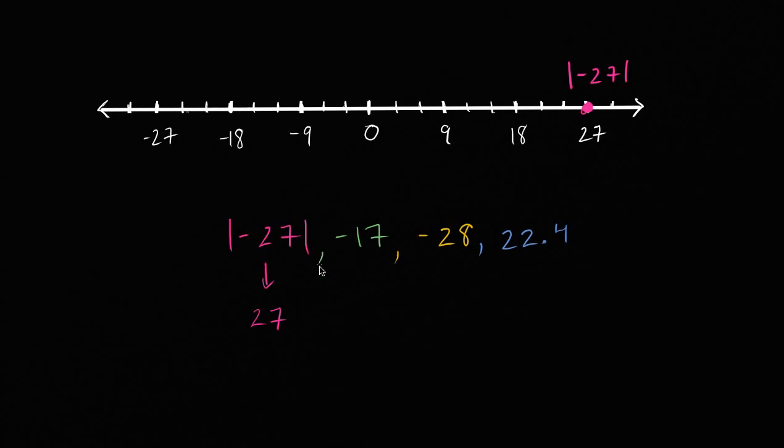All right, then we have negative 17. Well, negative 17, let's see, each hash mark here is 3. So this is negative 9, negative 12, negative 15. So negative 17 is going to be right around there. So that is negative 17.